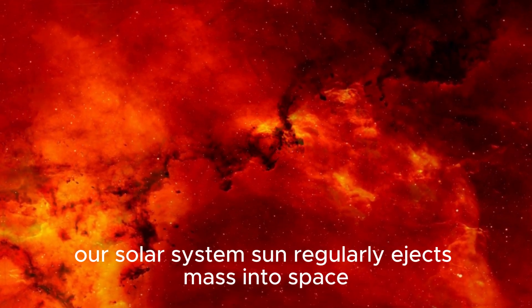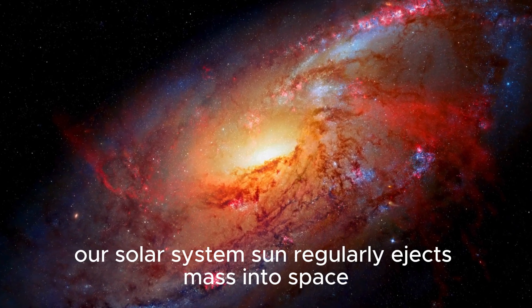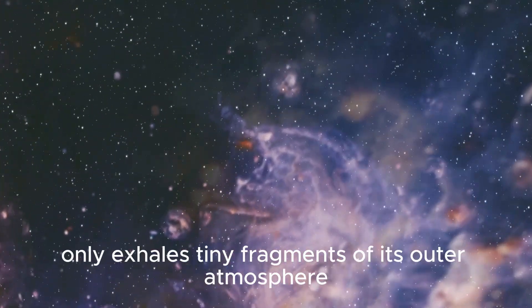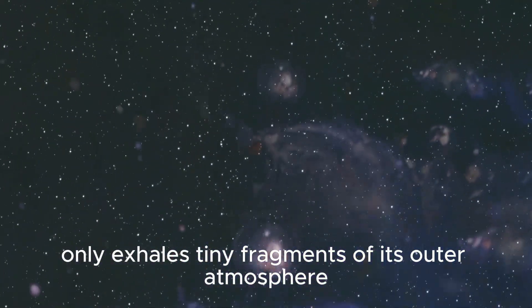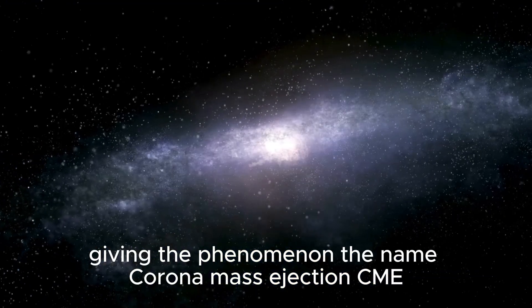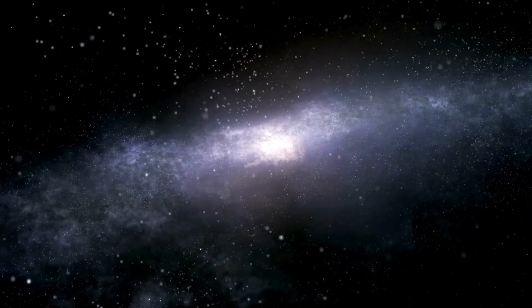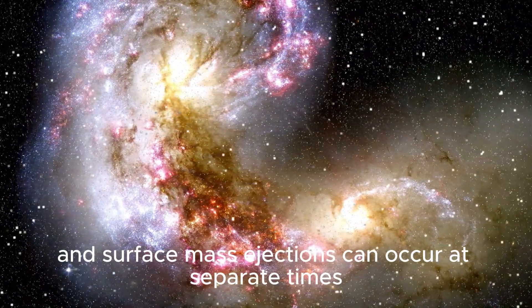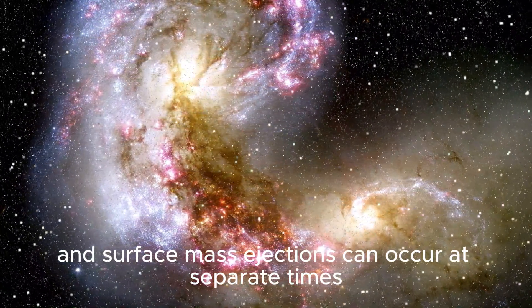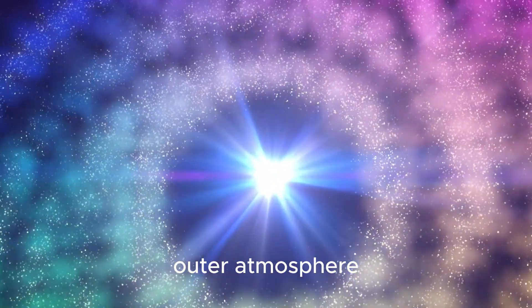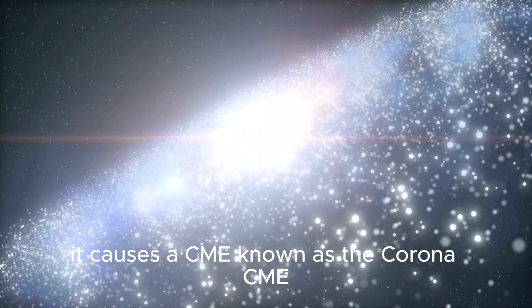Our solar system's Sun regularly ejects mass into space, which is known as solar flares. However, the Sun only exhales tiny fragments of its outer atmosphere, known as the corona, giving the phenomenon the name coronal mass ejection, or CME. As a result, coronal mass ejections and surface mass ejections can occur at separate times. When a star ejects a portion of its unstable outer atmosphere, it causes a CME.